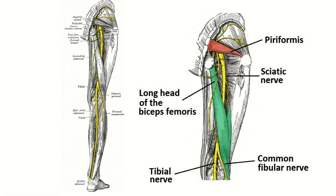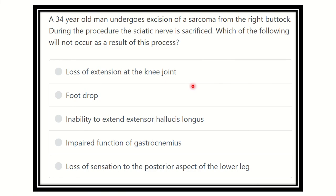Hello everyone, welcome to another lecture for the MCC exam — this is the question and answer session. The question: a 34-year-old man undergoes excision of a sarcoma from the right buttock. During the procedure, the sciatic nerve is sacrificed. Which of the following will NOT occur as a result of this procedure?